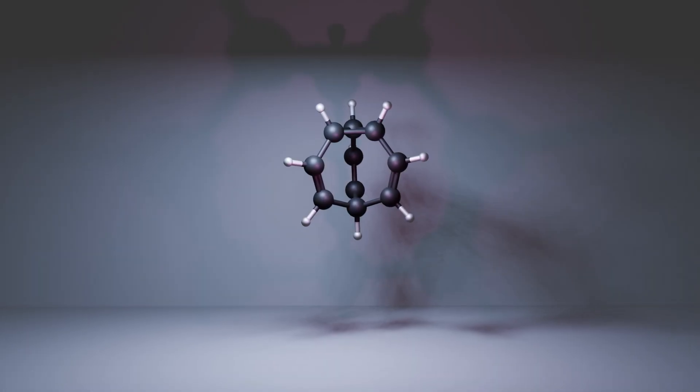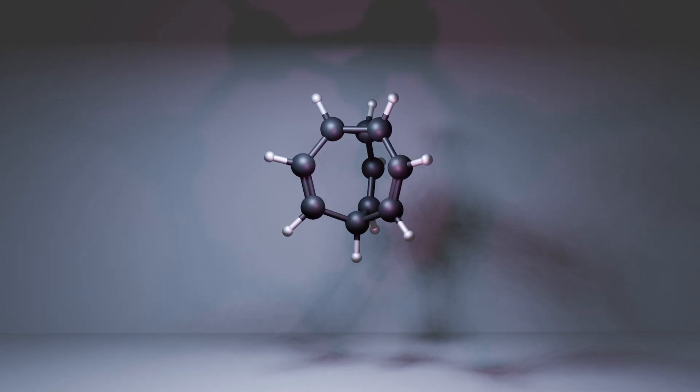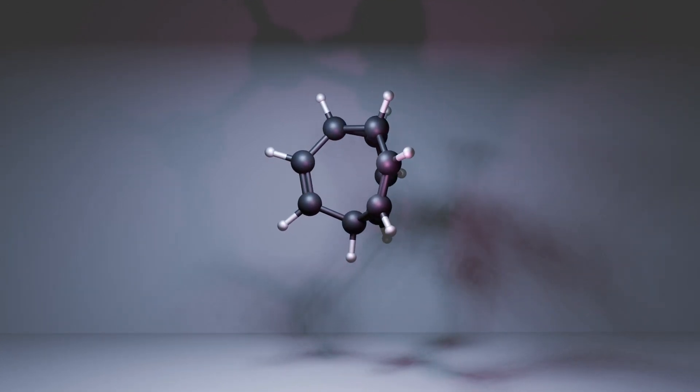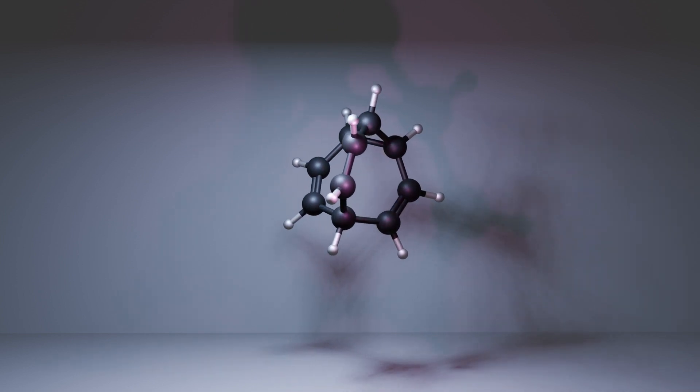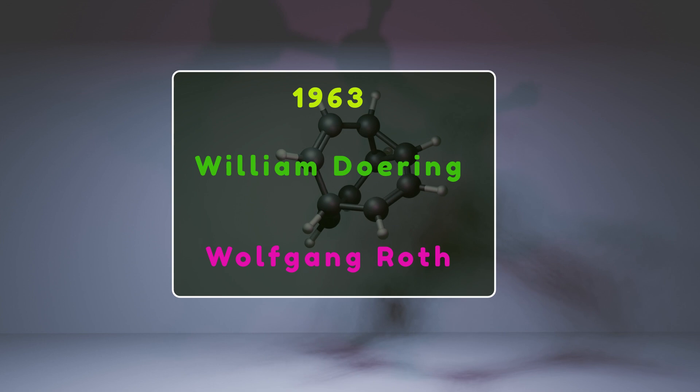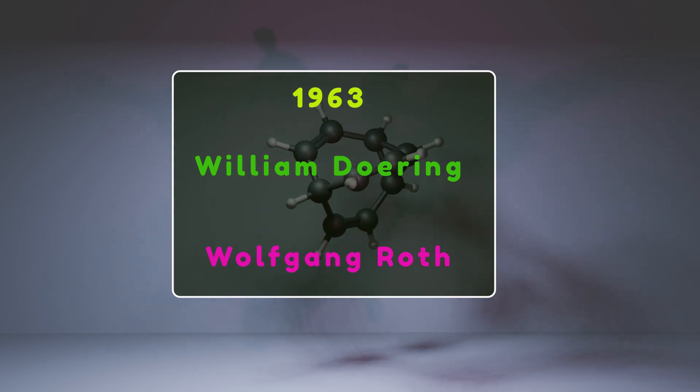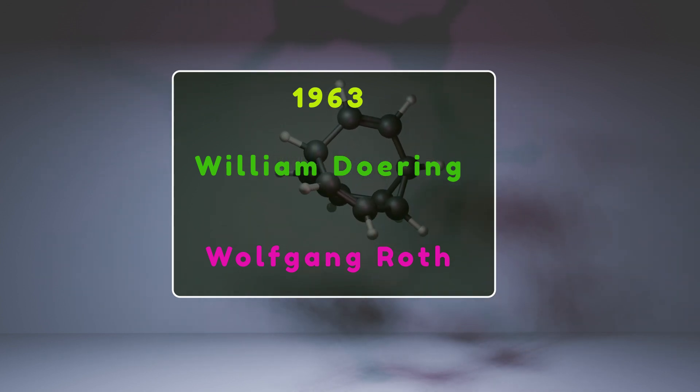The interesting fact about Bullvalene is that its existence was initially only a concept in the mind of scientists. Surely, this was one of the most daring predictions ever made in the history of chemistry. This bold prediction was made in 1963 by William Doering and Wolfgang Roth. It's a fascinating story, almost like playing a game with molecules and numbers. So if you're ready to play, let's dive right into it.